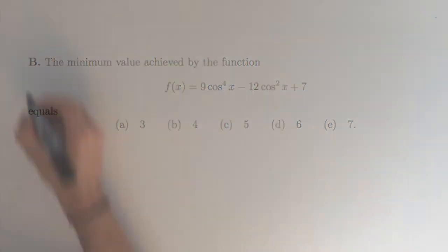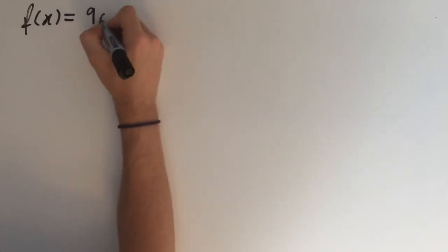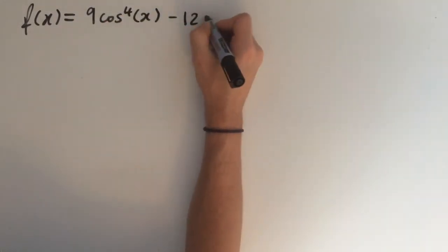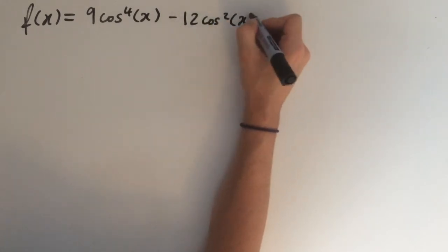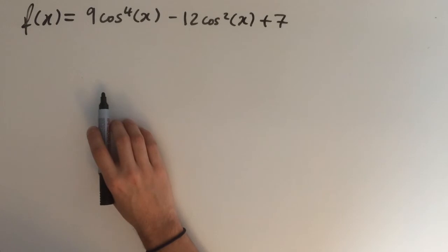So let's have a go at this question. Our function is f of x equals 9 cosine to the power of 4 of x minus 12 cosine squared of x plus 7. And we can simplify this function by using a substitution.